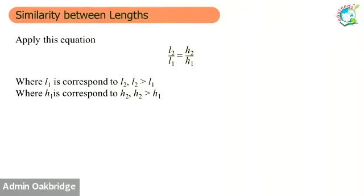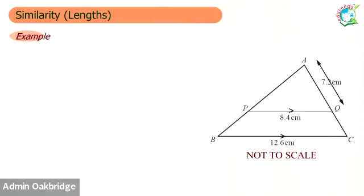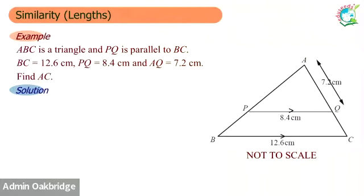Remember that L2 corresponds to L1. Let me show you what does it mean by correspond — H1 also corresponds to H2. So let's see this question. ABC is a triangle and PQ is parallel with BC. BC is 12.6, PQ is 8.4, AQ is 7.2. You want to find AC.